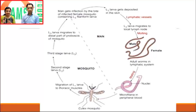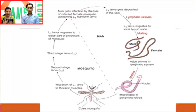The microfilariae subsequently undergoes development in the mosquito, and in a few days the mosquito becomes competent to transmit infection to another individual. This is known as a cyclodevelopmental life cycle, in contrast to malaria which is cyclopropagative — in malaria there is multiplication of different forms as well as morphogenesis. The clinical features of filariasis are not because of microfilariae but because of adult worms in the lymphatic vessels, which elicit inflammation. Repeated attacks of inflammation lead to fibrosis of the lymphatic vessels.